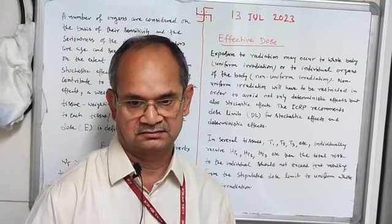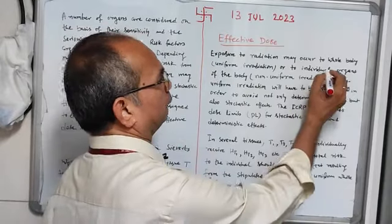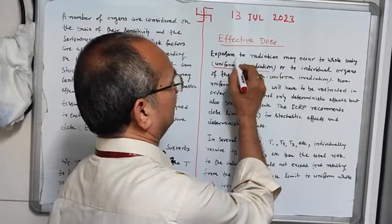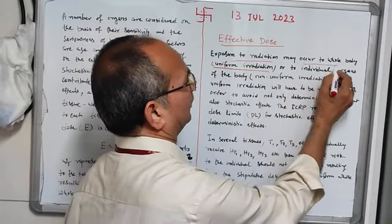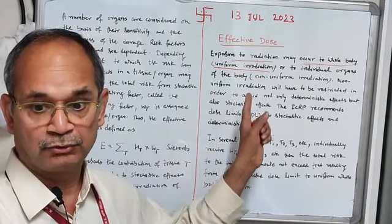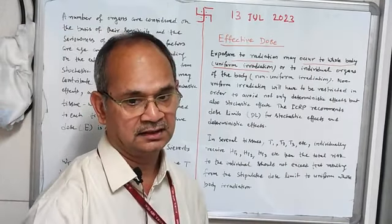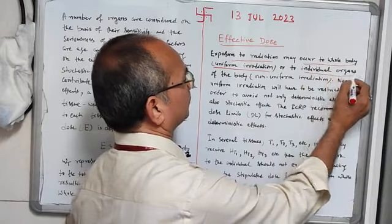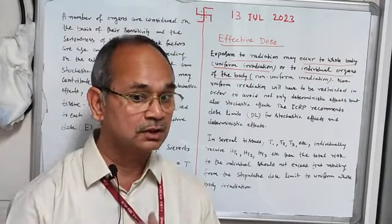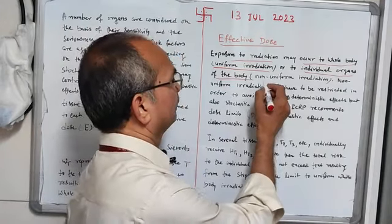Radiation exposure to the whole body can be uniform — exposure to radiation may occur to the whole body, which we call uniform irradiation. Or it can be that individual organs are exposed, in which case we call it non-uniform irradiation.